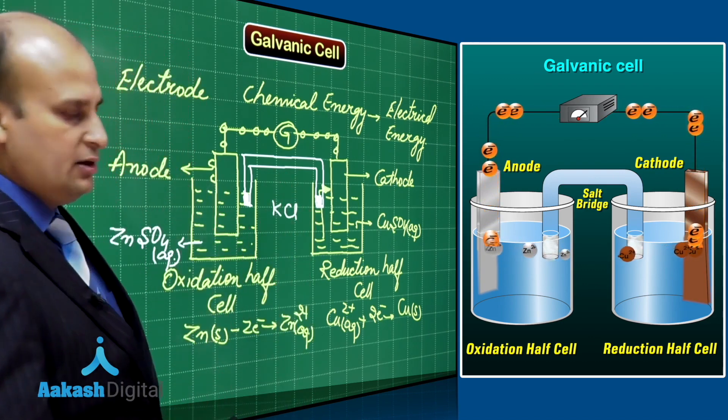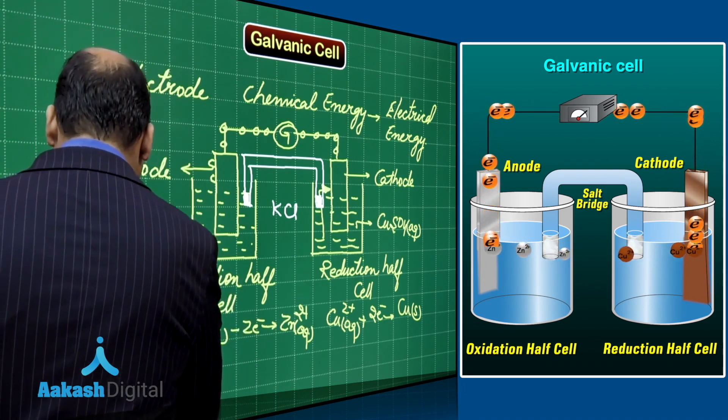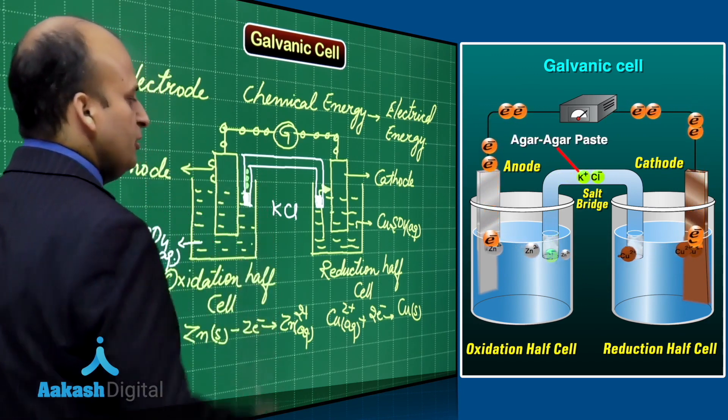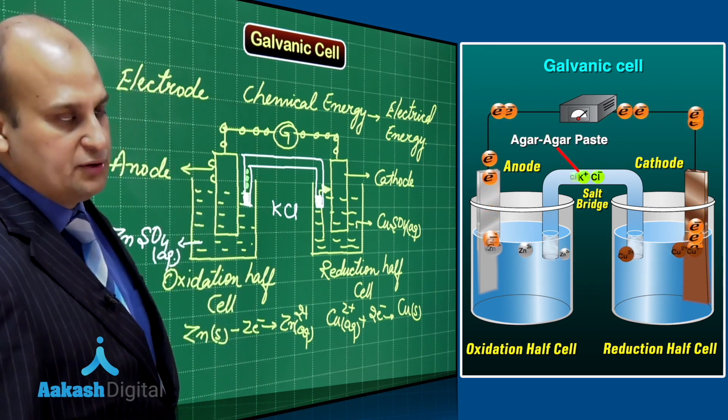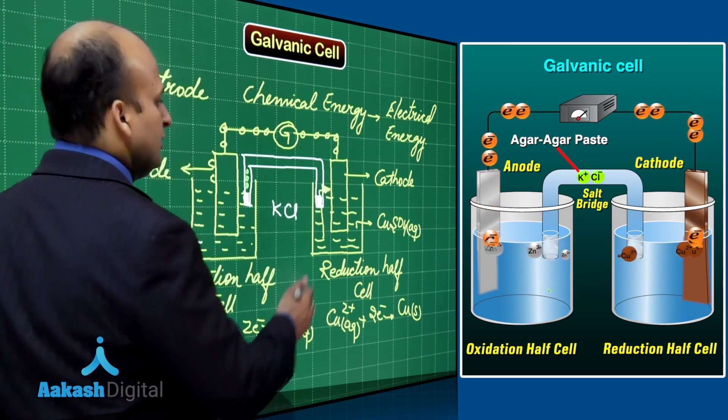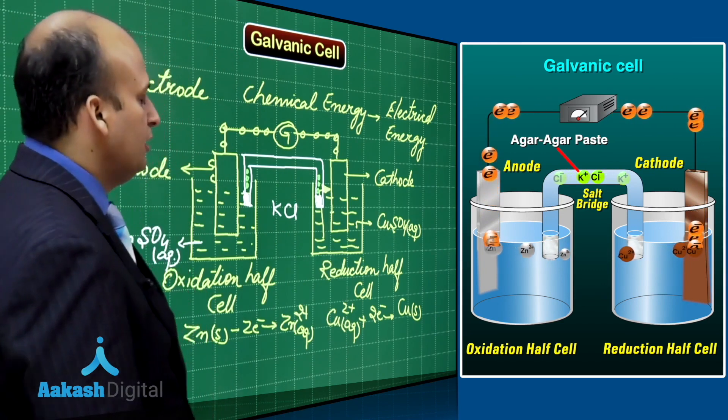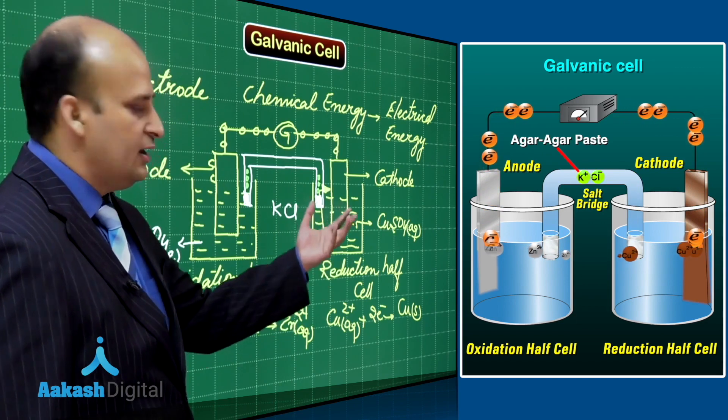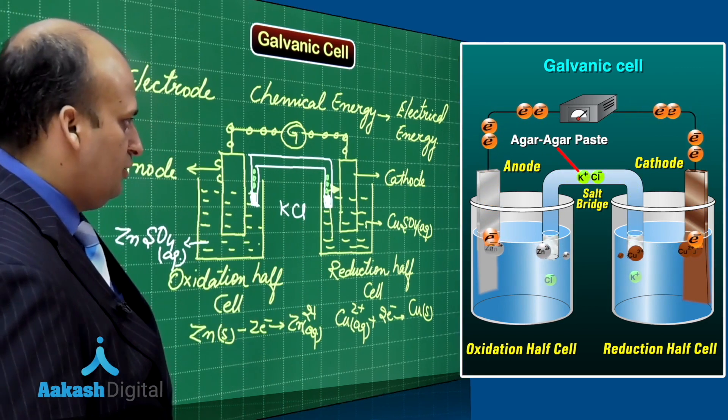So, what happens? The moment Zn²⁺ comes in the anodic half cell, the Cl⁻ ion, I am representing the Cl⁻ ion by green color, the Cl⁻ ion start going into the solution. So, the Cl⁻ ion neutralizes the positive charge of this solution. Same way, the moment Cu²⁺ goes and deposits on the cathode, the K⁺ ion start going into the solution. And thus, the K⁺ neutralizes the cathodic half cell. So, this is how the working of the cell is happening.